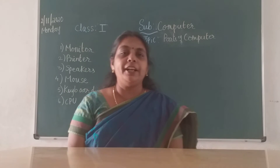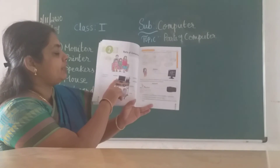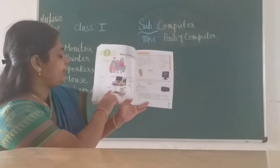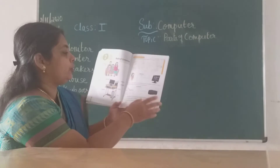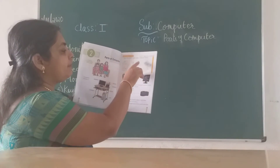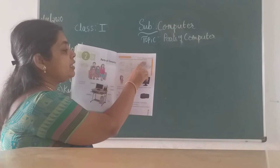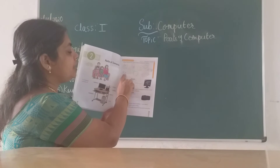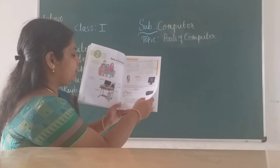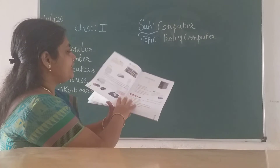Okay children, so take out your textbook. In your textbook you can see the parts of the computer: monitor, printer, speaker, mouse, CPU and keyboard. Then go to page number 11 children. Here you have different parts of computer given. Color the pictures which make a computer's family — identify the computer parts and color those only. Also in your keyboard identify how many number of keys are there.